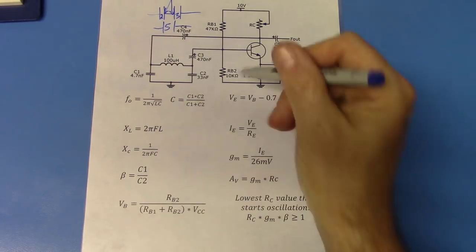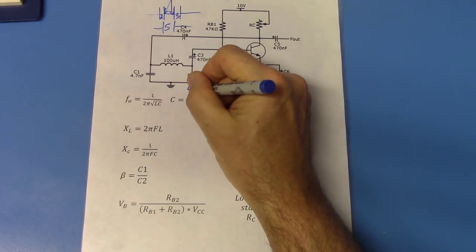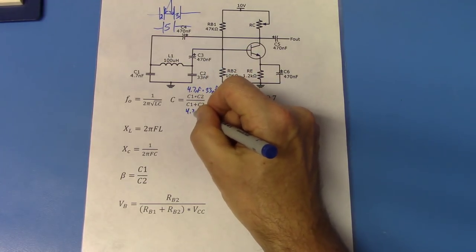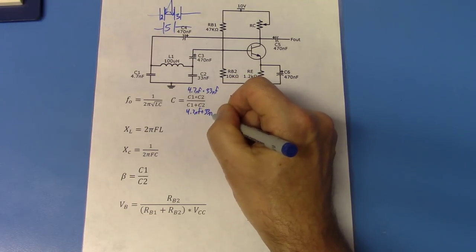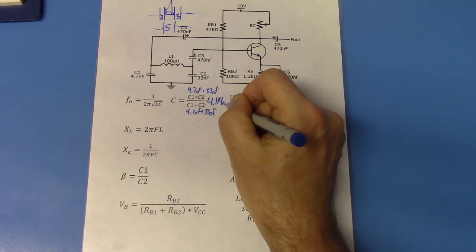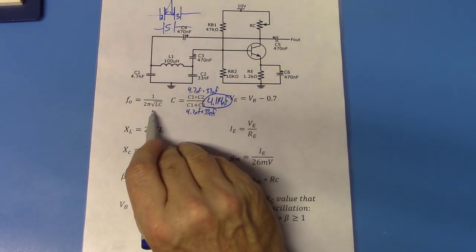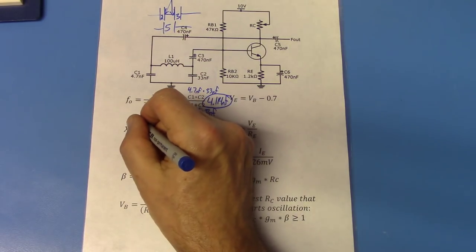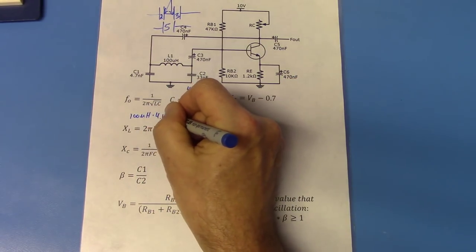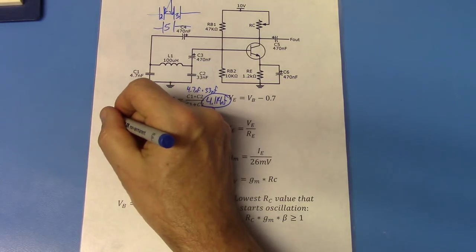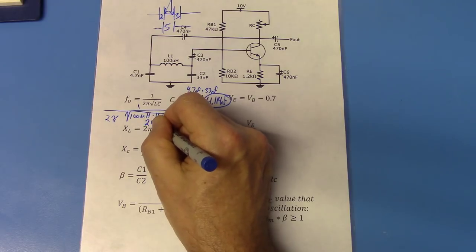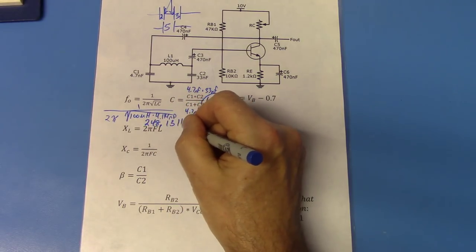We're going to have to use product over the sum. And with that, we're going to end up with 4.7 nanofarad times 33 nanofarad over 4.7 nanofarad plus 33 nanofarad. And the result is going to be 4.114 nanofarad. So there's our total capacitance. And we can plug that into our equation. And we have a 100 microhenry inductor times 4.114 nanofarads square root 2 pi, etc. And we get a frequency of 248.13 kilohertz.